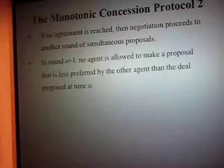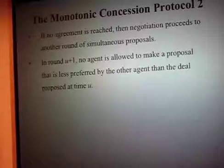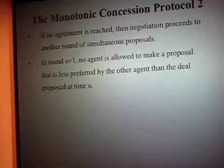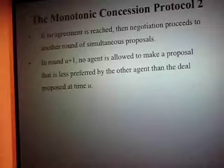If no agreement is reached, negotiation proceeds to another round of simultaneous proposals. On the next round, a rule is introduced: no agent is allowed to make a proposal that is less preferred by the other agent than the deal proposed in the previous round. You have to make your deal progressively worse for yourself — you can start from the best deal and move toward the worst acceptable deal, but you cannot in the middle go back and improve your deal.